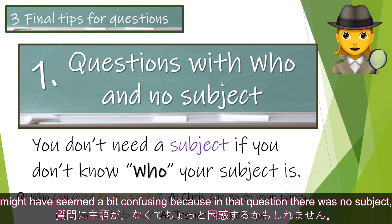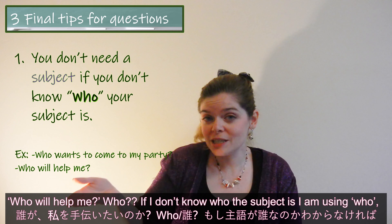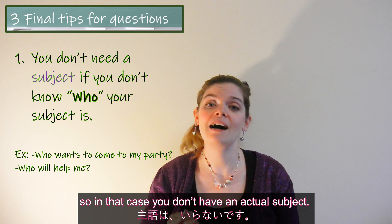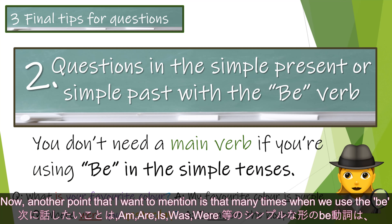The last question, 'Who will come to my party?' might seem a bit confusing because there is no subject — because I don't know who, right? Who wants to come to my party? Who will help me? If I don't know who the subject is, I'm using 'who,' so in that case you don't have an actual subject.